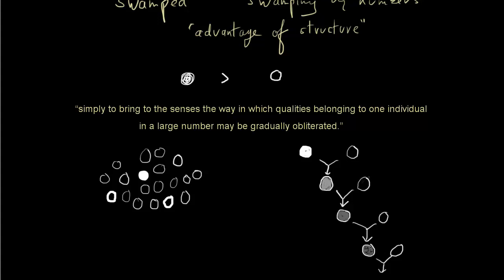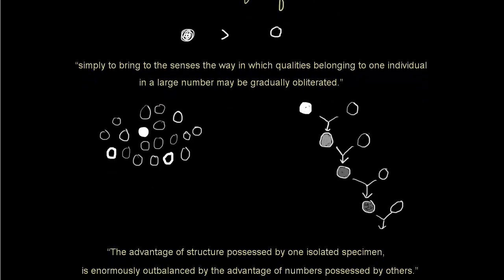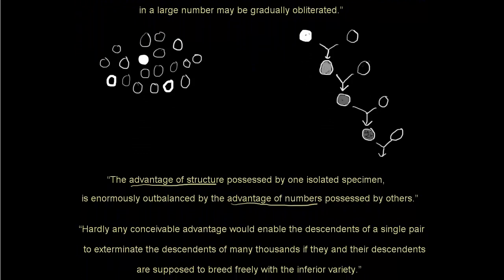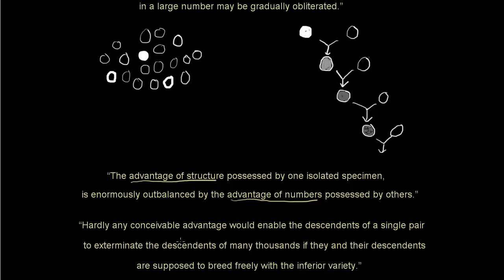In Jenkin's words: the advantage of structure possessed by one isolated specimen is enormously outbalanced by the advantage of numbers possessed by others. So that hardly any conceivable advantage would enable the descendants of a single pair — that is, of whites — to exterminate the descendants of many thousands — that is, blacks — if they and their descendants, the greys, are supposed to breed freely with the inferior variety, the blacks.